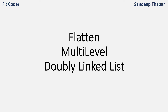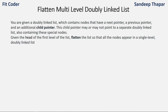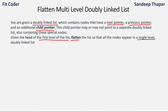In this video we'll discuss how to flatten a multi-level doubly linked list. We are given a doubly linked list where each node has three pointers: a next pointer, a previous pointer, and an additional child pointer. We are given the head of the first level of the list and we need to flatten it so that all the nodes appear in a single-level doubly linked list.